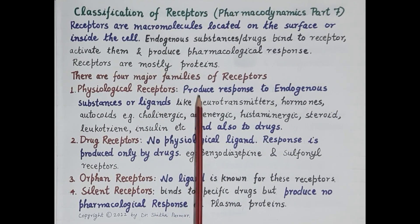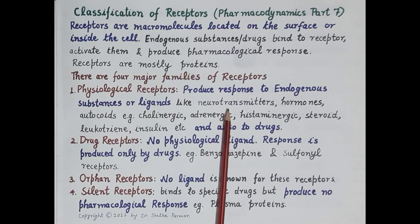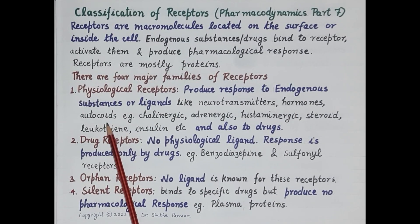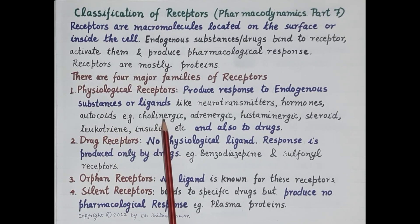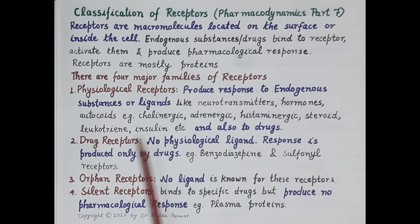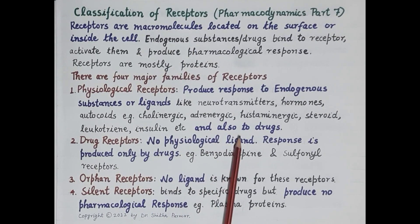Endogenous substances like acetylcholine, adrenaline, insulin, or drugs bind to these receptors, activate them, and produce a pharmacological response. Receptors are mostly proteins. There are four major families of receptors. The first are the physiological receptors, which produce a response to endogenous substances or ligands — substances that bind to receptors — including neurotransmitters like acetylcholine and adrenaline, hormones like insulin, and autacoids like histamine.